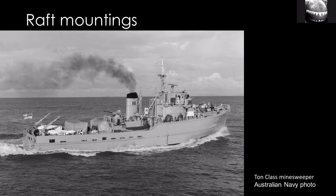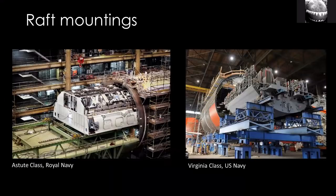Within both countries there have been developments, and the raft mountings you see today are very different from those in the 1960s. These more modern examples — from Astute class and Virginia class production, both publicly released images — show the idea: you're mounting the insides of the submarine increasingly insulated, sound-insulated from the outside, to reduce the amount of noise transmitted out. Other countries also did this going back a long time, and today it's particularly noteworthy in France, Russia, Sweden, and I'm sure most other countries.